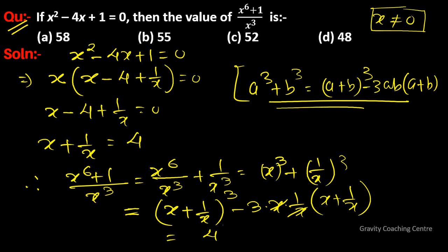So 4³ minus 3 times 4, which is 64 minus 12, equals 52. The answer is option c, the correct answer.